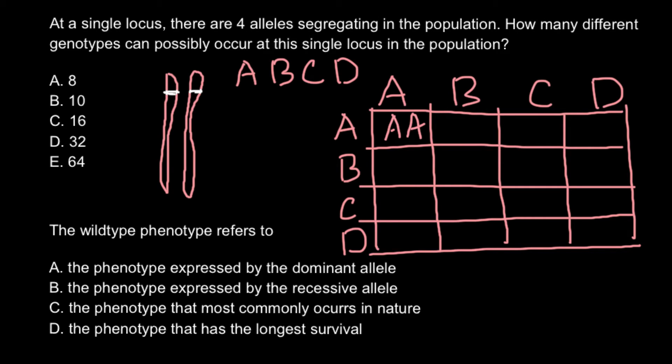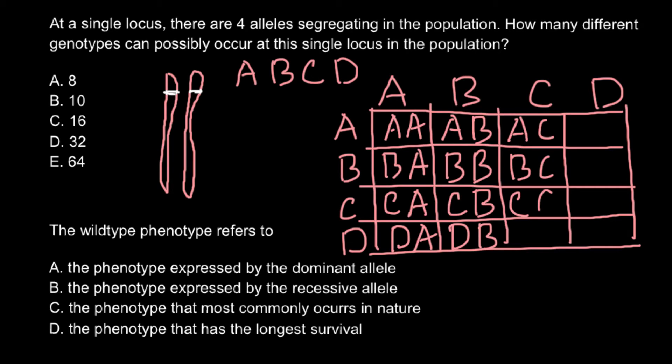So capital A, capital A here, capital B, A here, capital C, A here, and D, A here. Here we have A, B, B, B, B, B, C, B, and D, B. Here we have A, C, B, C, C, C, and D, C. And here we have A, D, B, D, C, D, and D, D.